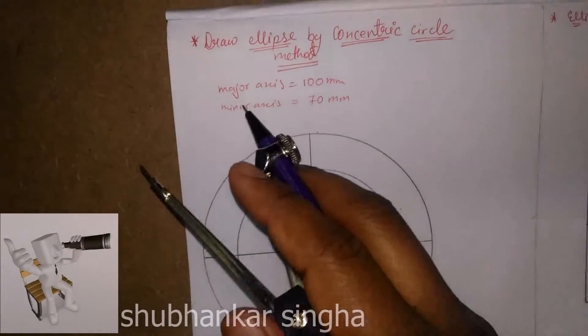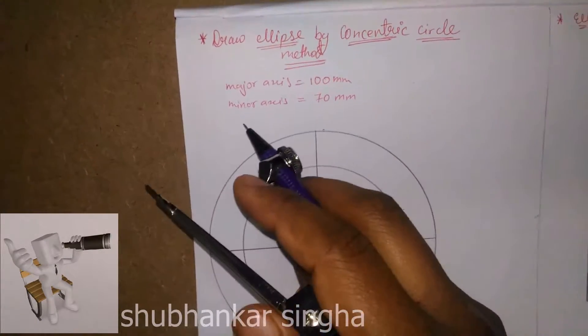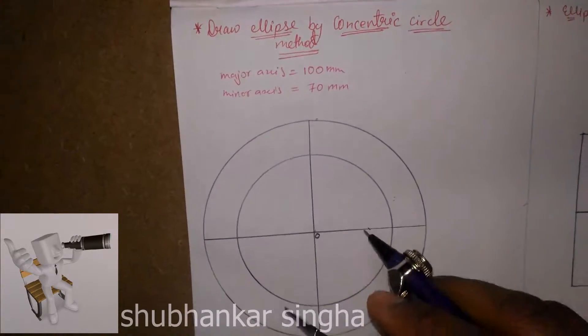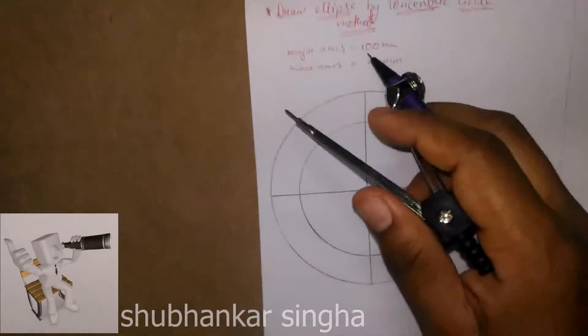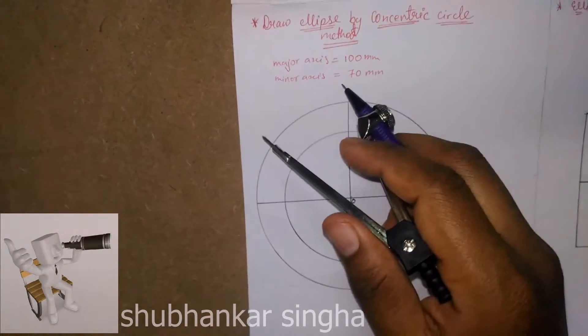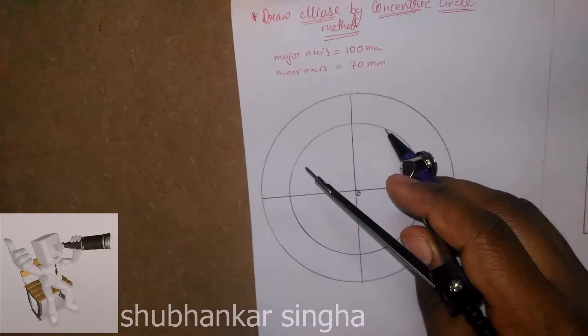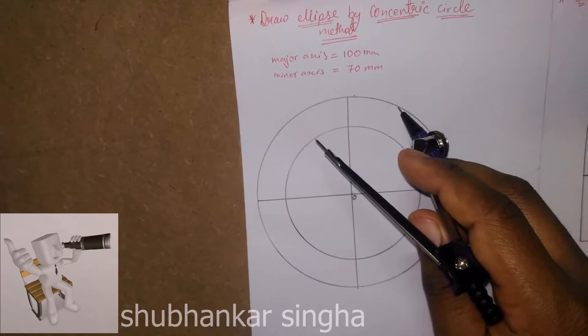Here we have a major axis as 100mm and minor axis as 70mm. I've already drawn the circle of radius, one of radius 100mm and another of radius 70. This is 70mm diameter, oh sorry diameter, and this is 100mm diameter.